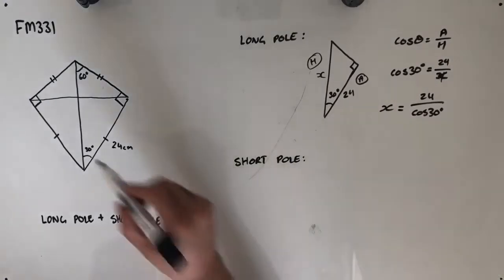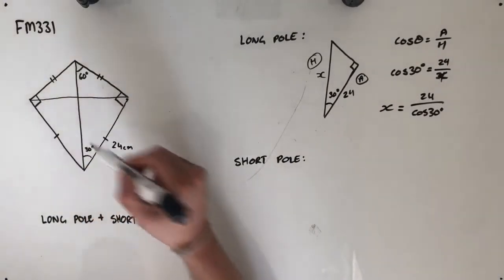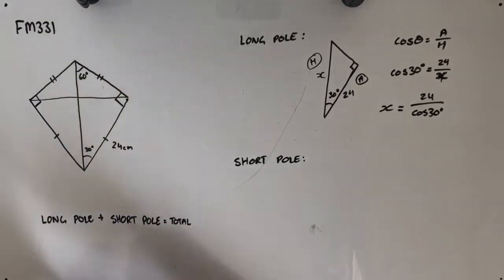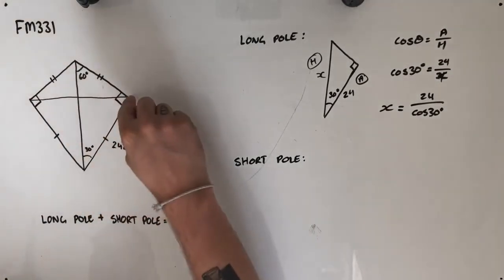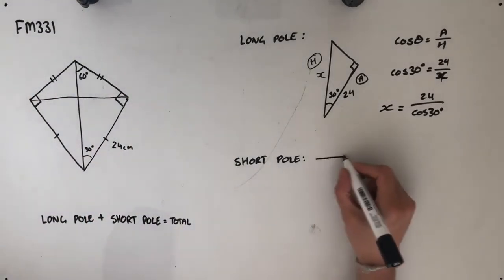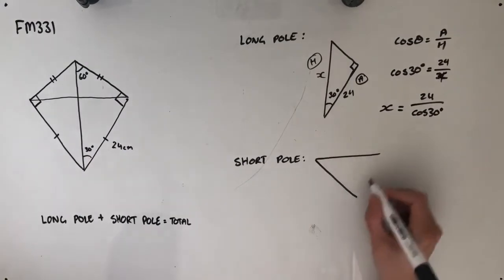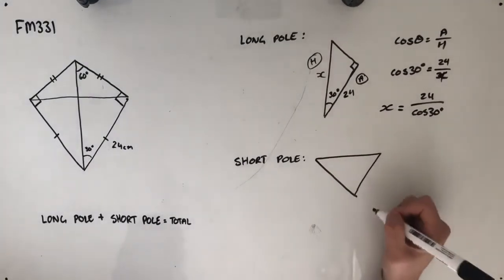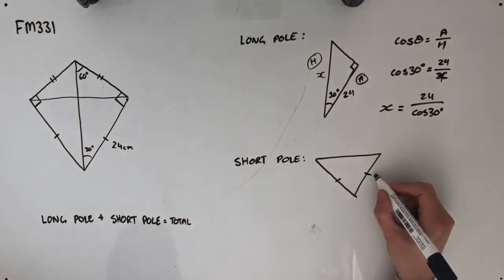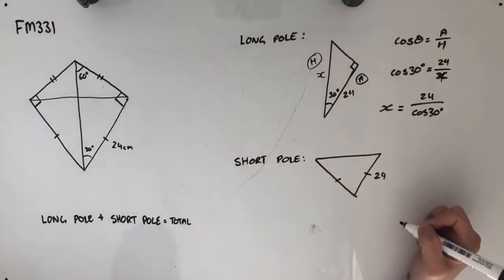So with the short pole, which is this length here, once again, you could use this triangle above. I've chosen to use this triangle down the bottom. So it looks a bit like that. Now what I know about this triangle is that these two side lengths are the same and they're both 24 centimeters.